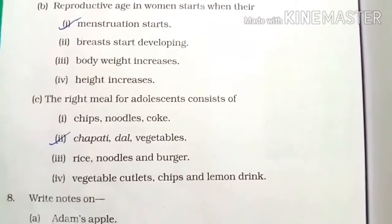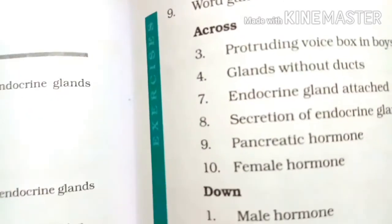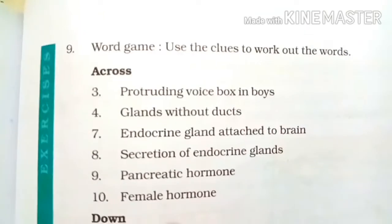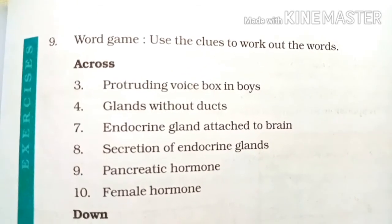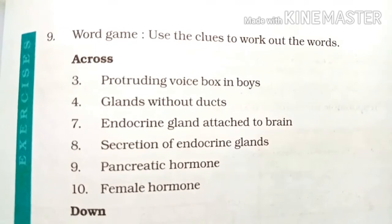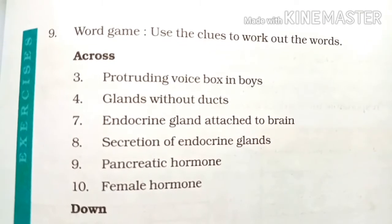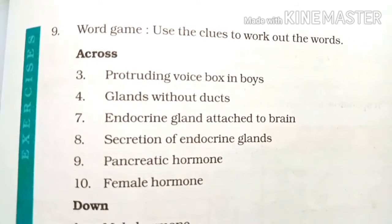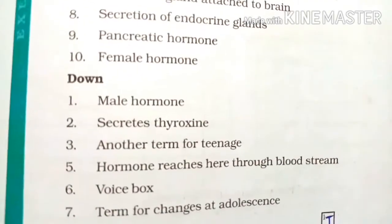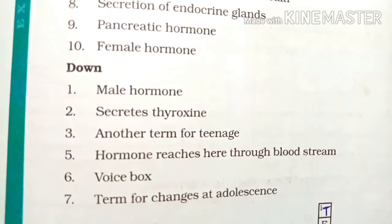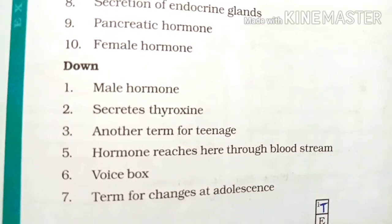Now we will move on to the word game given in your book. Use the clues to work out the words. Across: protruding voice box in boys; glands without ducts; endocrine gland attached to brain; secretion of endocrine glands; pancreatic hormone; female hormone. Down: male hormone; secretes thyroxin; another term for teenage; hormone reaches here through bloodstream; voice box; term for changes at adolescence.